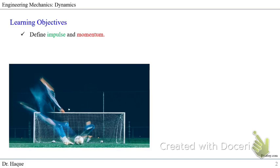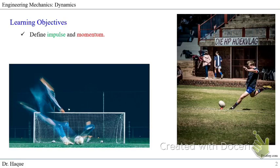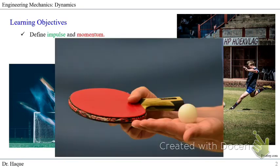The soccer player applies force for a very short period of time and the ball flies. Similarly, a football player uses his leg to transfer force over a short period of time — that is impulse — and the ball gains momentum: mass multiplied by the velocity gained. Another example is the ping-pong ball: you apply force from your paddle to the ping-pong ball so it goes to the next court and comes back.